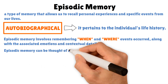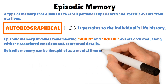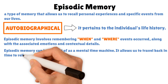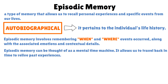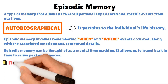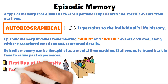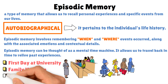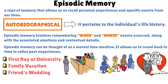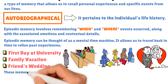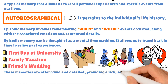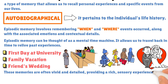Episodic memory can be thought of as a mental time machine. It allows us to travel back in time to relive past experiences. For instance, remembering your first day at university, a family vacation, or a friend's wedding are all examples of episodic memories. These memories are often vivid and detailed, providing a rich sensory experience when recalled.